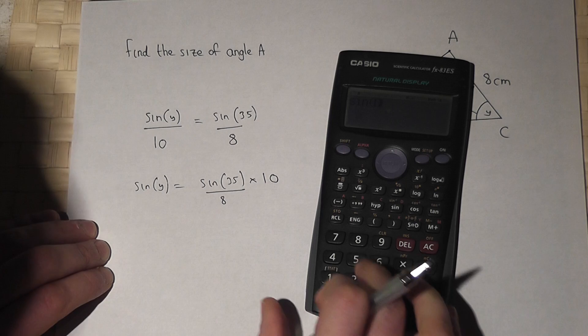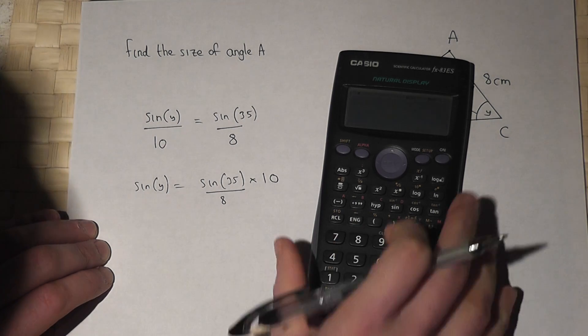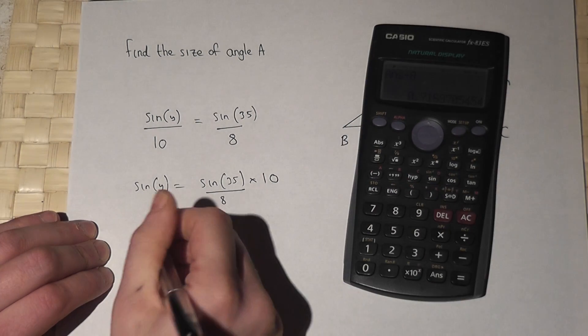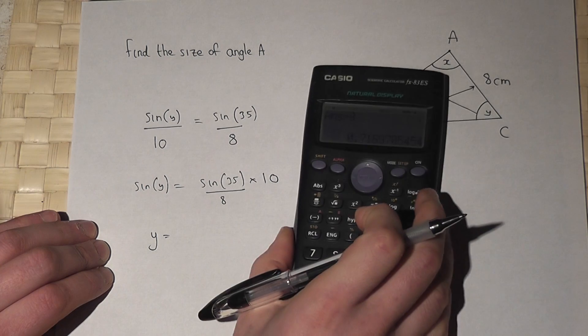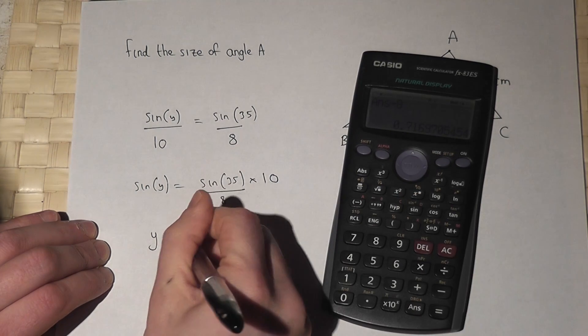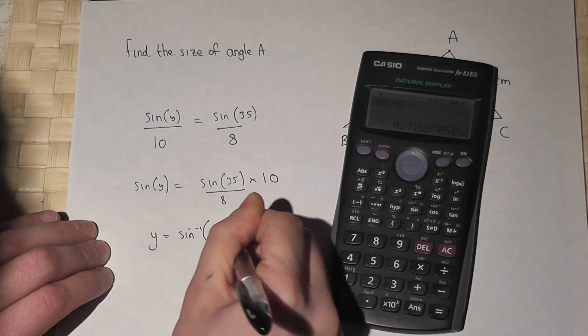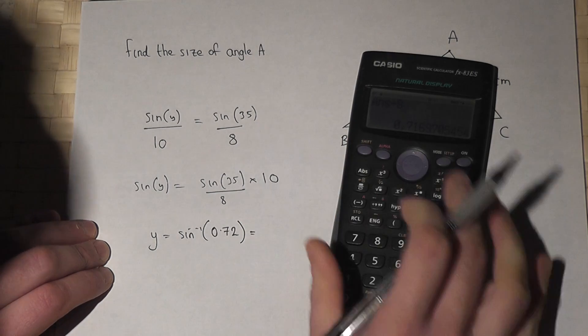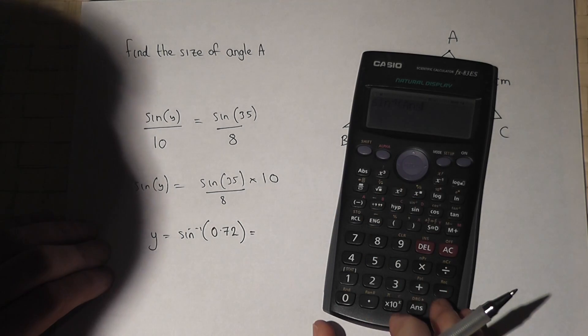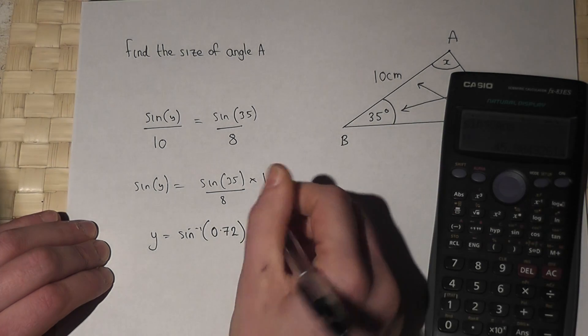So in my calculator, I'll do sine 35 times by 10 and I divide by 8. And this gives me sine Y. So to find Y, I'll do the inverse sine of that number there. So inverse sine of 0.72, that's just rounded. So shift sine of answer, press enter, and I get 45.8 degrees.